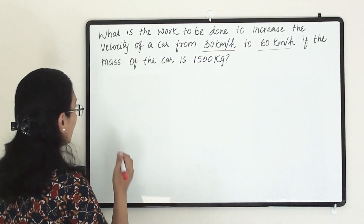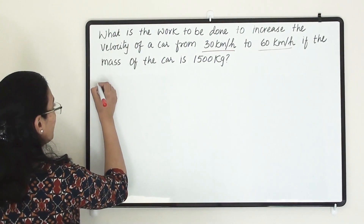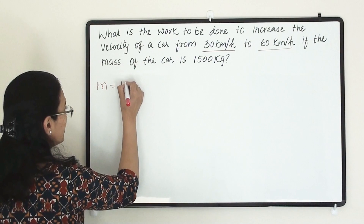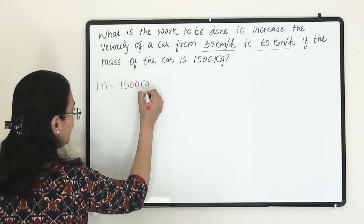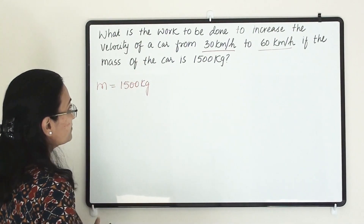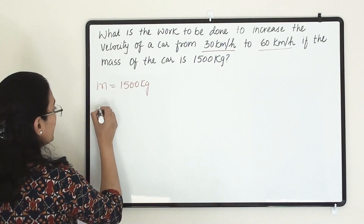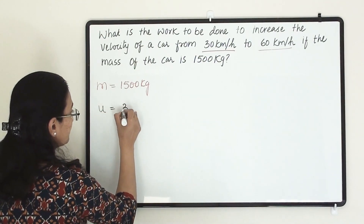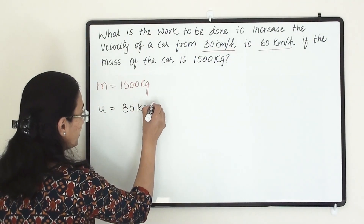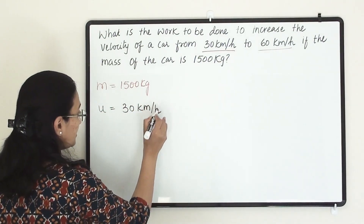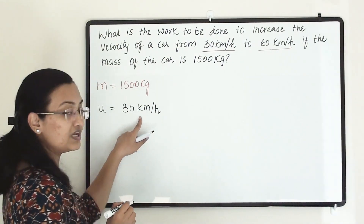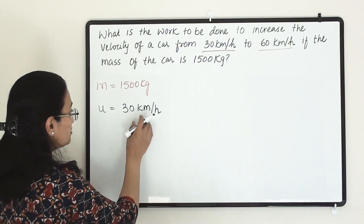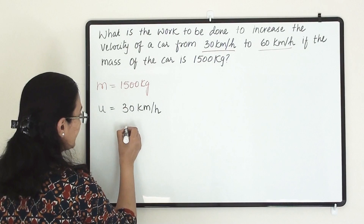Let us note down all the details. Mass equals 1500 kg. The initial velocity is 30 km per hour. Now this unit needs to be in meters per second, so we need to convert this into meters per second.